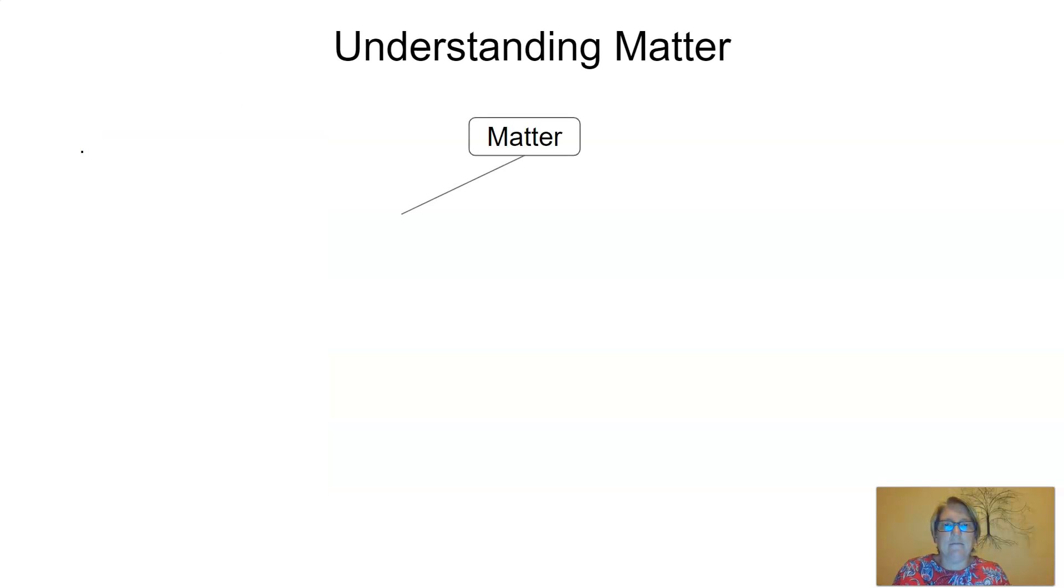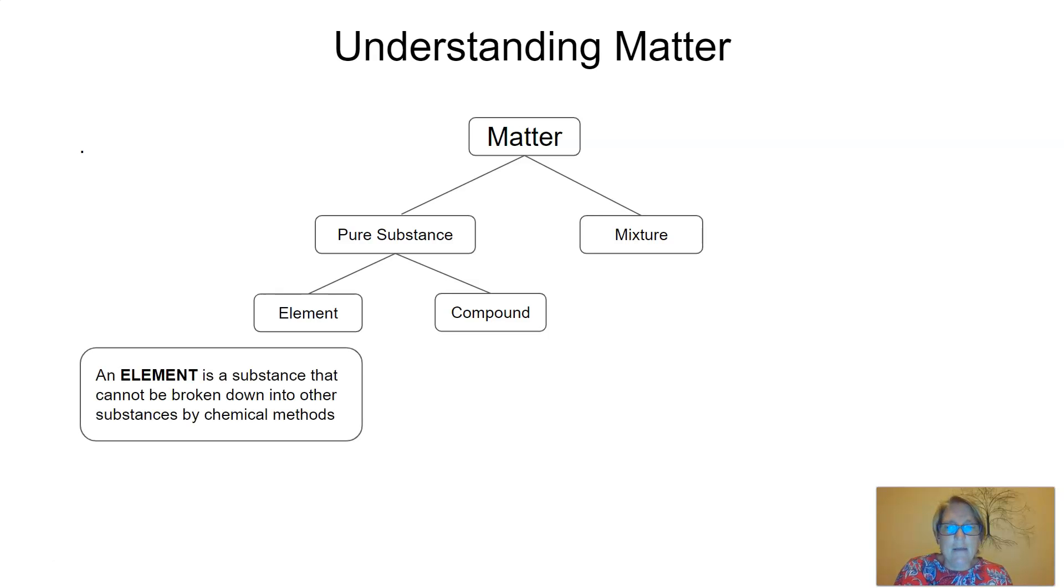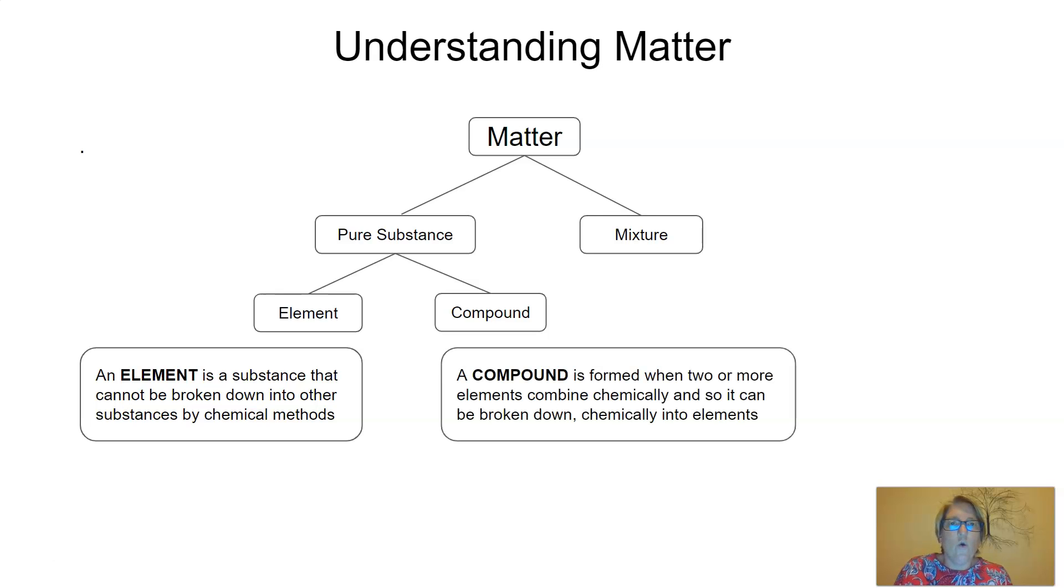So understanding matter. Matter can be divided into two categories: one, a pure substance, and two, a mixture. There's more about these terms in tomorrow's lesson. A substance is also divided into two components: an element and a compound. The definition for an element is a substance that cannot be broken down into other substances by chemical methods. A compound is formed when two or more elements combine chemically, and so it can be broken down chemically into its elements.